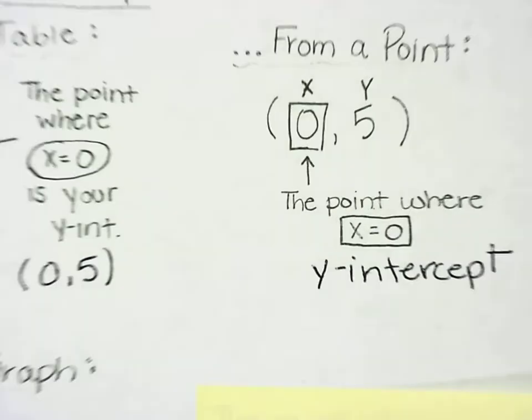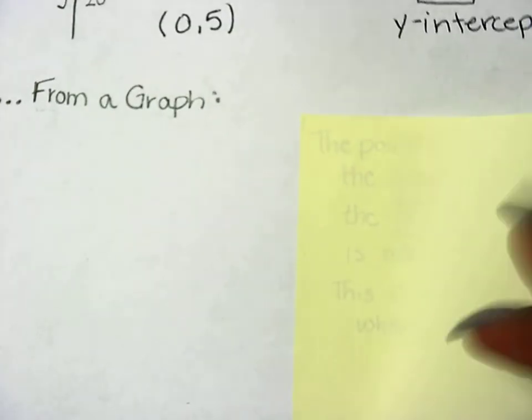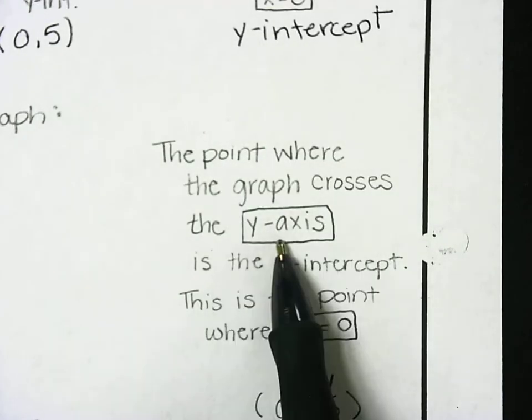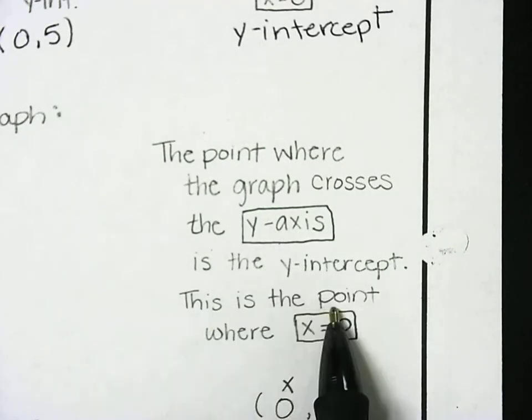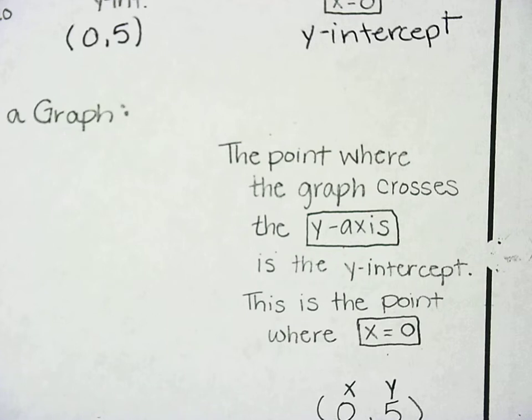Now, looking at it on a graph is pretty simple as well, but you can't let yourself get confused. On a graph, the y-intercept is the point where the graph crosses the y-axis. It is also the point where x is equal to zero, like we just said.